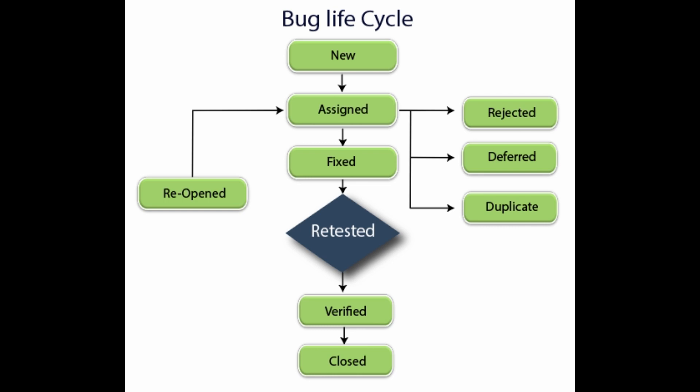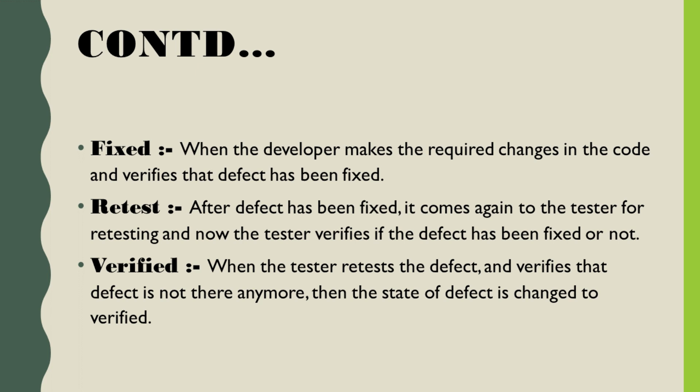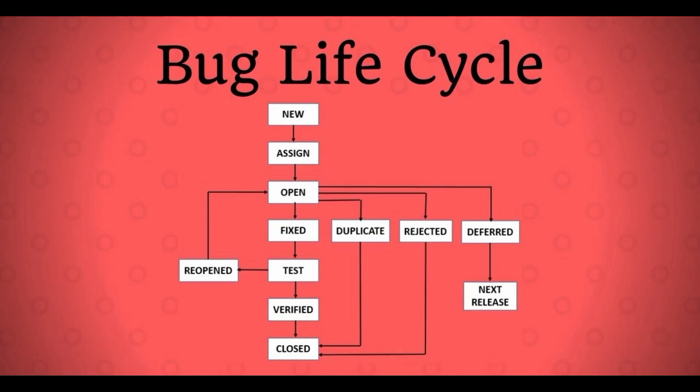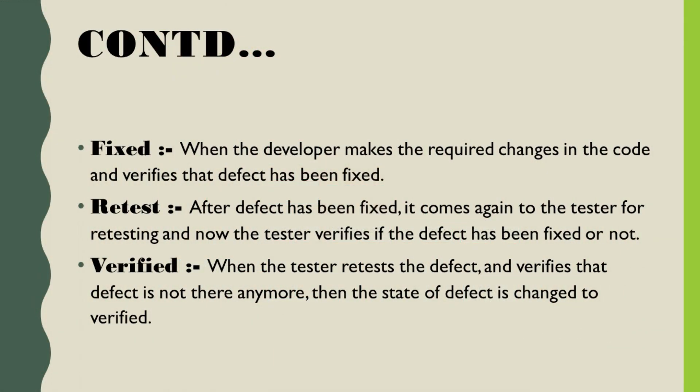Now comes the retest state. When the developer fixes the code for the defect and sends it for testing, the tester retests the code at this state and verifies whether the defect is fixed or not, and changes the state to retest. The next one is the verified state. The status is changed to verified when the tester retests the defect and finds that the defect doesn't exist anymore — meaning it's fixed.